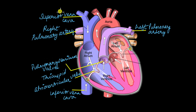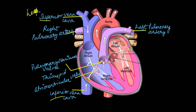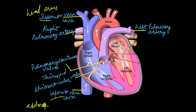We will start with deoxygenated blood reaching the heart from different parts of the body. There are two main blood vessels that make this possible: the superior vena cava and the inferior vena cava. The superior vena cava brings in blood from the top part of your body like your head and arms, while the inferior vena cava brings in blood from the lower parts like your abdomen and legs. Through these, deoxygenated blood enters the right atrium.